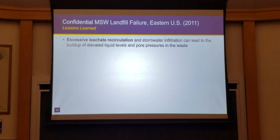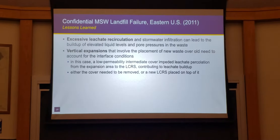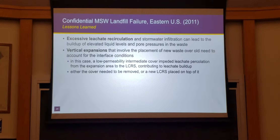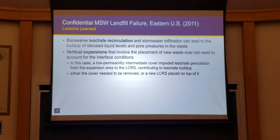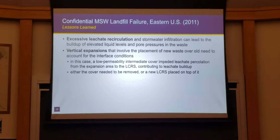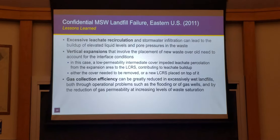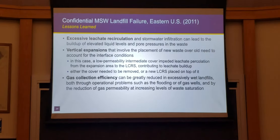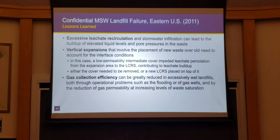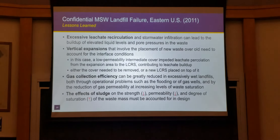Lessons from this case: excessive leachate recirculation and stormwater infiltration can lead to elevated liquid levels and increased pore pressures. Vertical expansions involving placement of new waste over existing waste need to account for drainage conditions — either strip the low-permeability intermediate cover before expansion or place a new drainage layer on top of it specifically for the expansion. Gas collection efficiency is greatly reduced in excessively wet landfills. The effects of sludge on shear strength, permeability, and degree of saturation of waste must be accounted for in design.